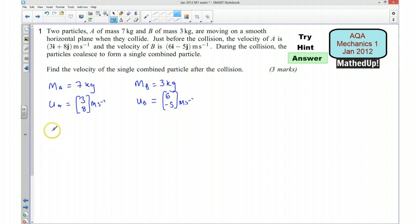So I'm now going to have a new mass and we want to find the velocity of the single combined particle after collision. So I'm also going to have a new velocity. Well my new mass, I've just written a capital M for that, and that's going to be the sum of A and B. So that's going to give me 10 kg.